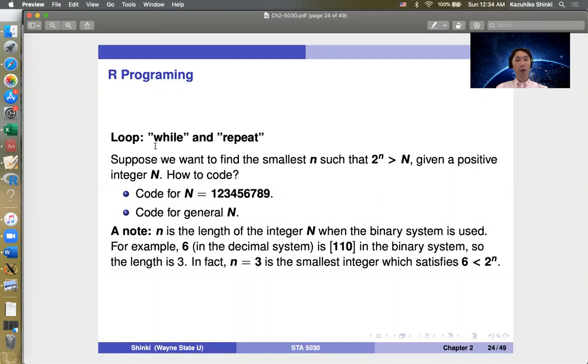Suppose we want to find the smallest integer n such that 2^n > N, given a positive integer N. How to code? At first we think about code for specific N, and then we consider code for general N. This should be a function.